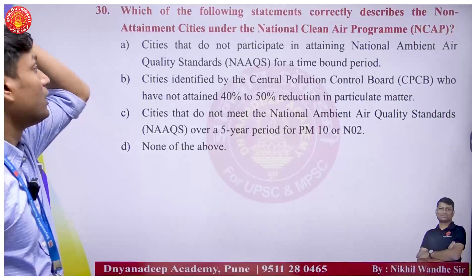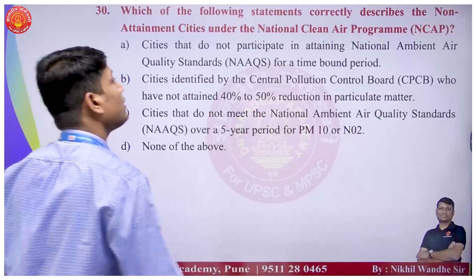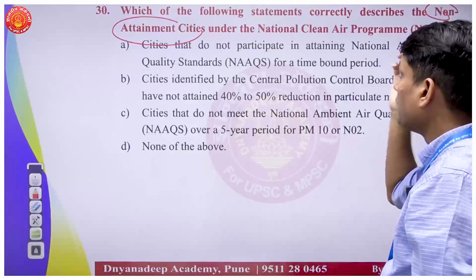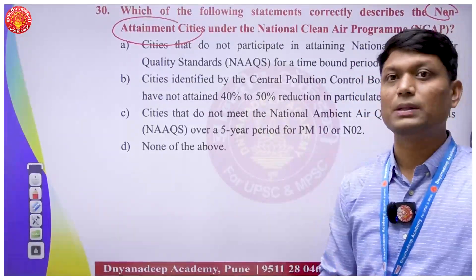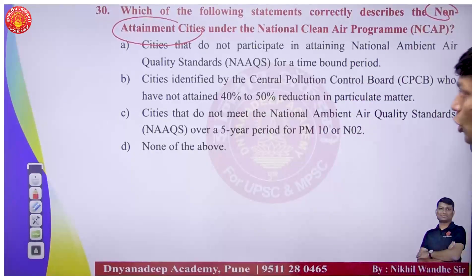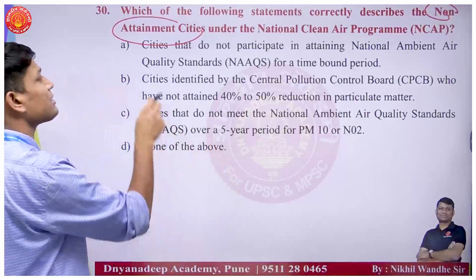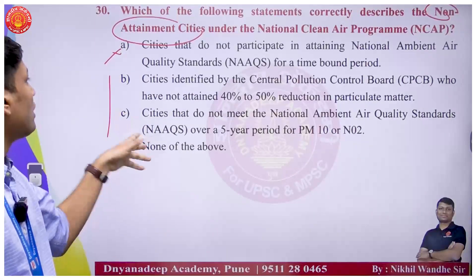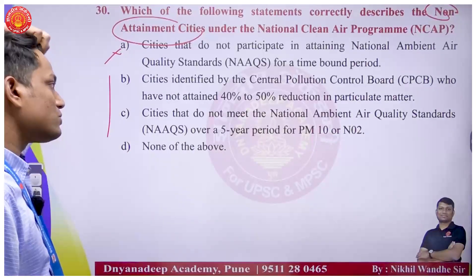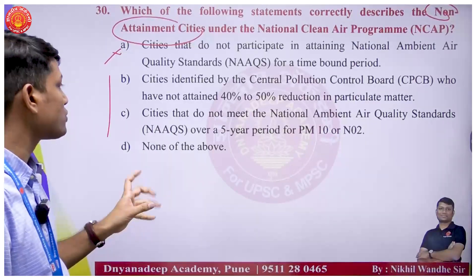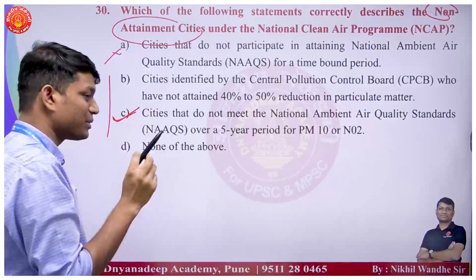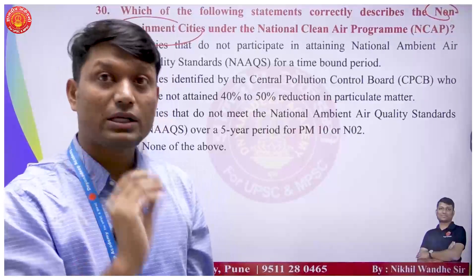NCAP - National Clean Air Programme. Non-attainment cities are those cities identified by CPCB that do not meet National Ambient Air Quality Standards over a five-year period for PM10 or nitrous oxides - option C is correct. NCAP came in 2019 under the Ministry of Environment, Forest and Climate Change. The target was to cut PM10 and PM2.5 by at least 20% with 2017 as the base year.